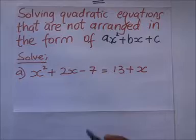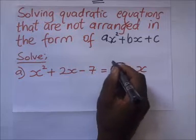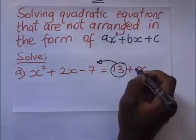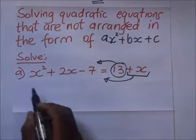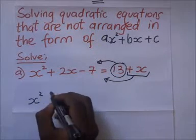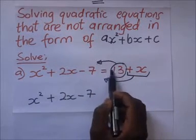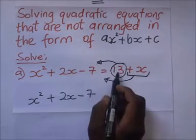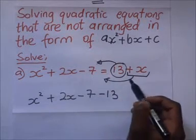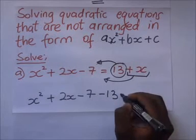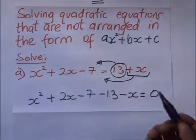Arranging it, we have to make sure that this equation is equated to zero. That means this 13 is supposed to come over, crossing the equal sign. Likewise, this positive X also crosses the equal sign. So it's going to become X squared plus 2X minus 7. The 13, when it crosses, becomes negative 13, and the positive X becomes minus X, all equal to zero.